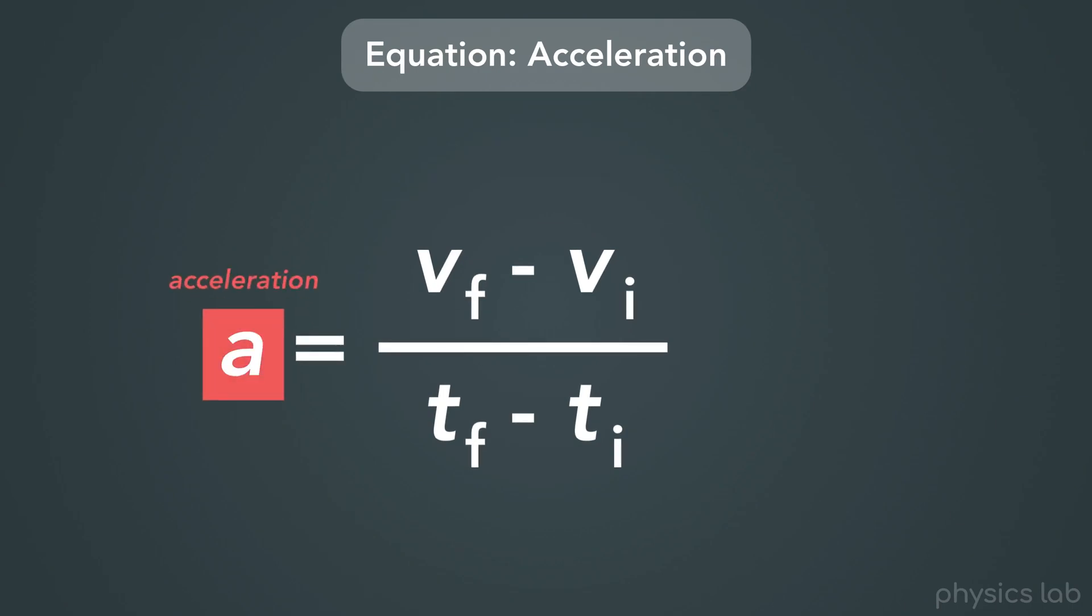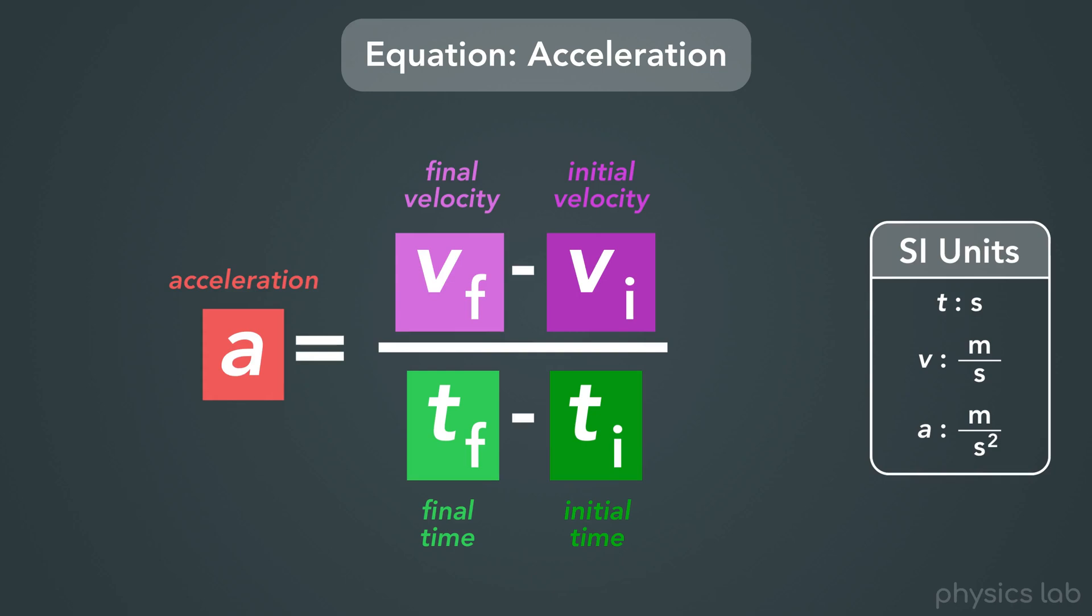So a stands for acceleration, vf is the final velocity, vi is the initial velocity, tf is the final time, and ti is the initial time. And here are the SI units for the variables in this equation. Time is in seconds, velocity is in meters per second, and acceleration is in meters per second squared.